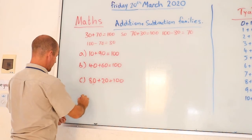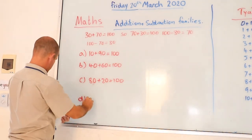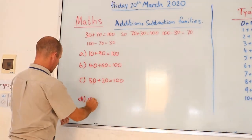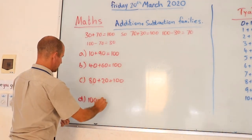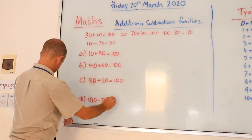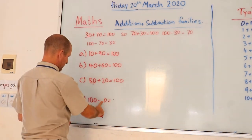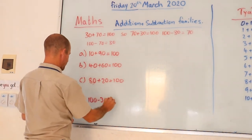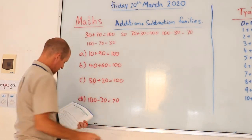And then finally, we have part D, which is 100 minus 70. No, it's not. Teacher Ben's reading it wrong. It's 100 minus 30 is equal to 70.